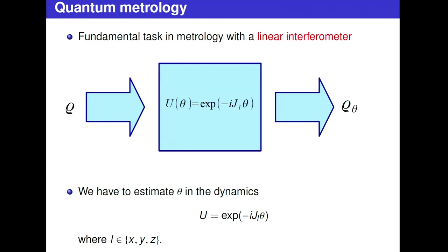What is quantum metrology? The fundamental task is that a density matrix enters a unitary dynamics with a parameter theta, and you get rho-theta as the output. You would like to estimate theta based on measurements on rho-theta. Typically the Hamiltonian operator is the angular momentum component, because it is just a sum of single-spin terms with no interaction, and it is much easier to create such Hamiltonians in a controlled way than creating interactions.